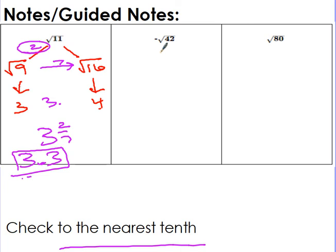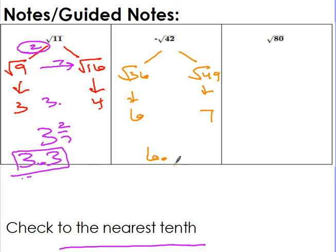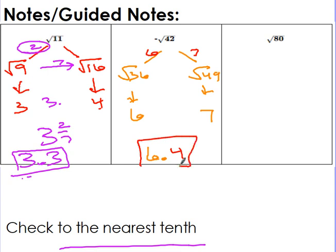Let's do the square root of 42 together, then you'll try 80 on your own. The two perfect squares are the square root of 36 (which is 6) and the square root of 49 (which is 7), so the answer has to be 6-point-something. Now, how far is 42 from 36? It's 6 away. How far is it from 49? It's 7 away — which means it's very close to being right in the middle, but a little closer to 36.